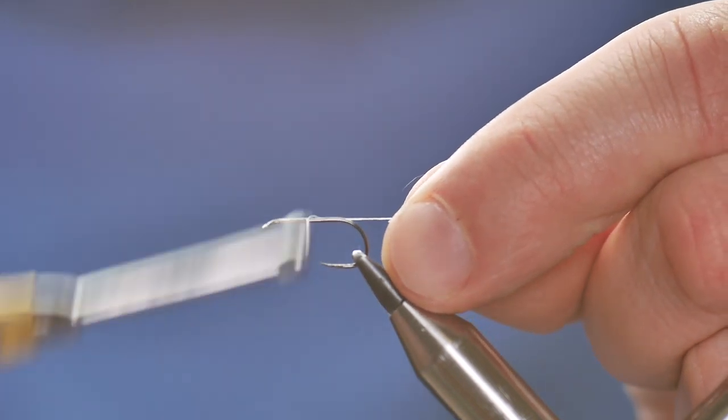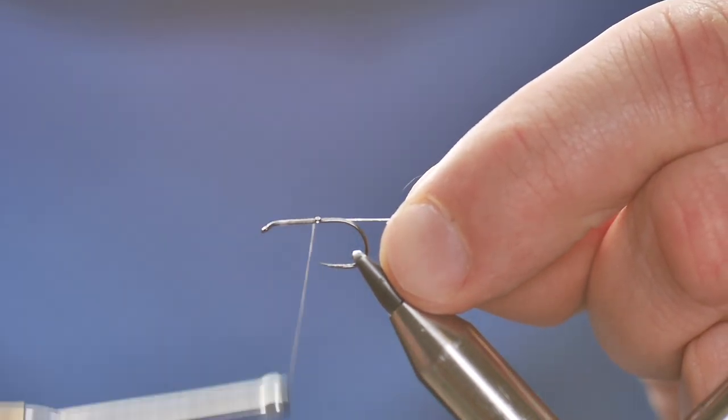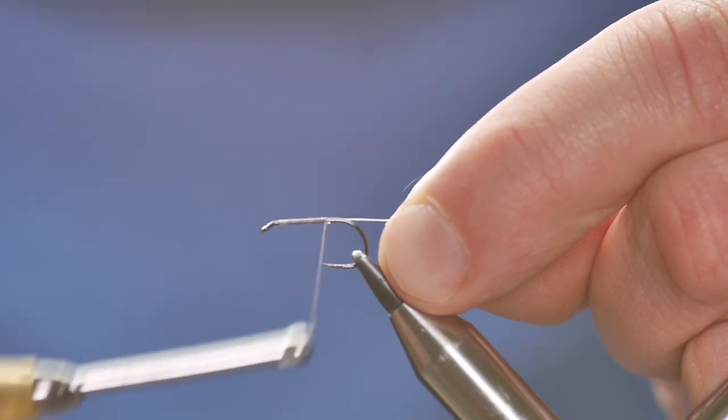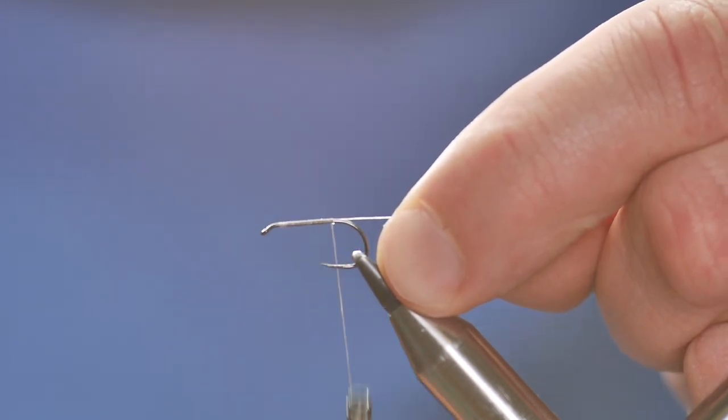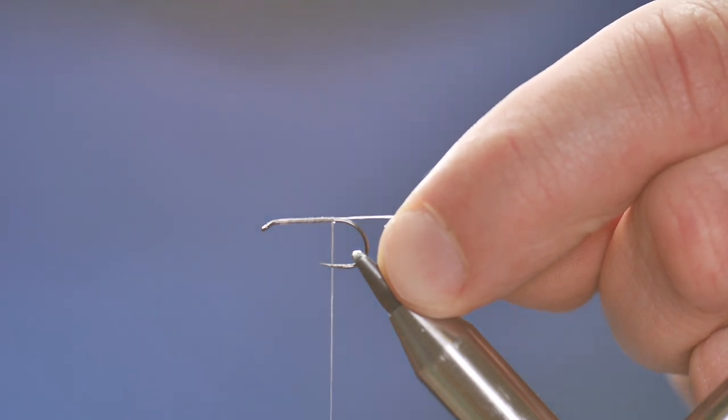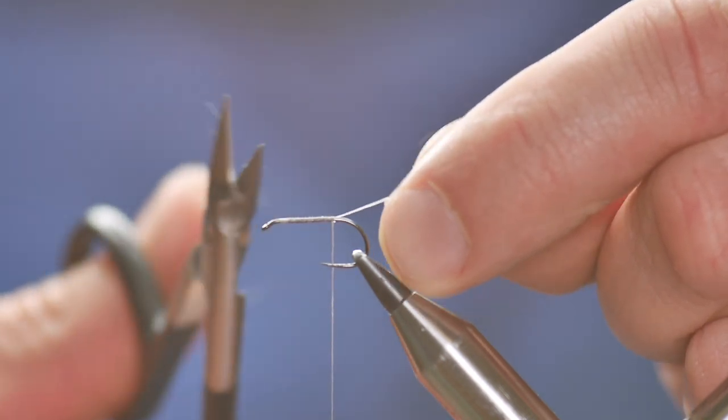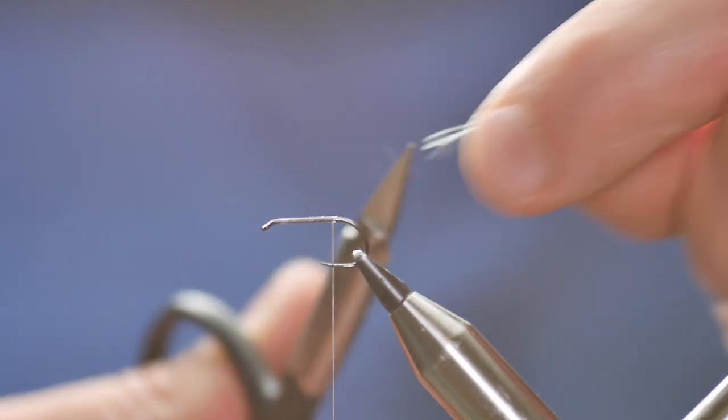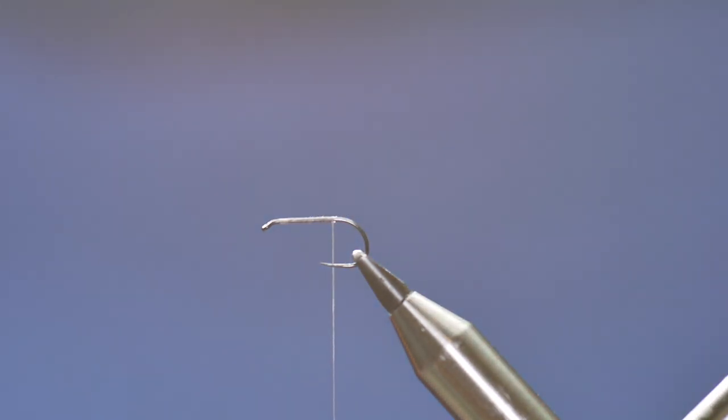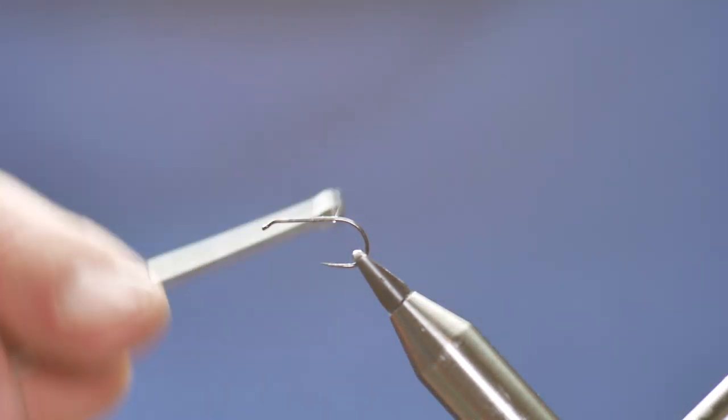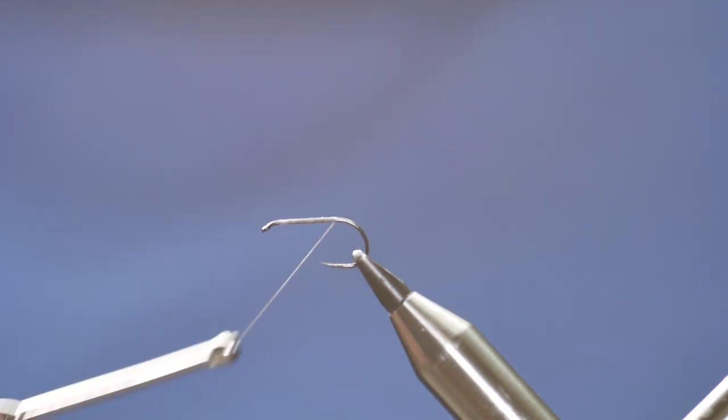I'll get a bed of thread down. As I get towards the end of my shank, I'm just going to remove my waste and then catch in the last little tag here. I've now got my thread level where a barb would be on a barbed hook.